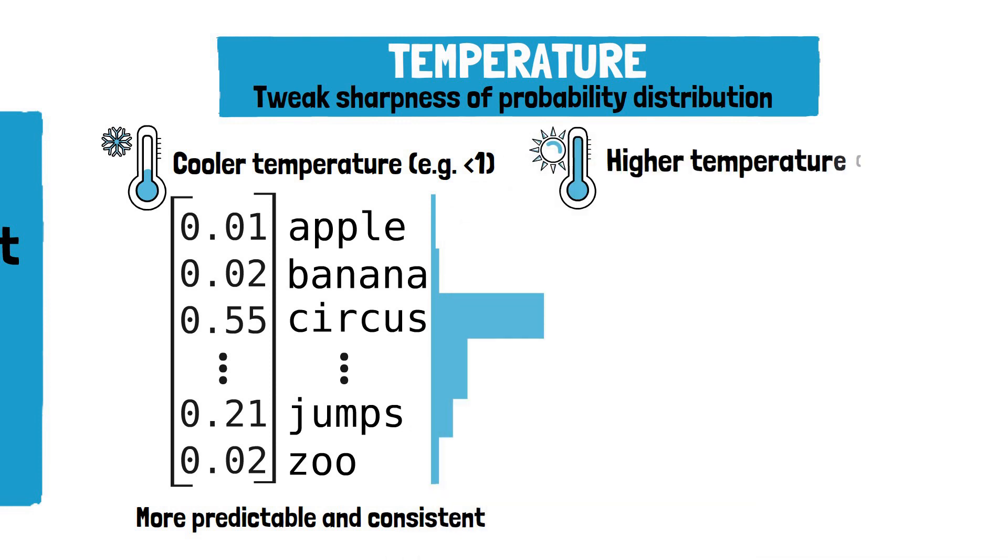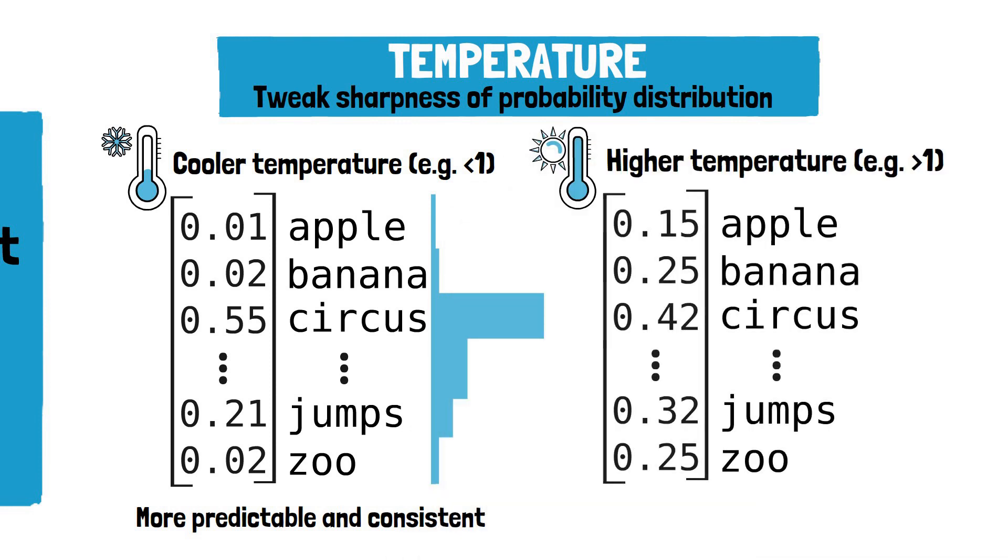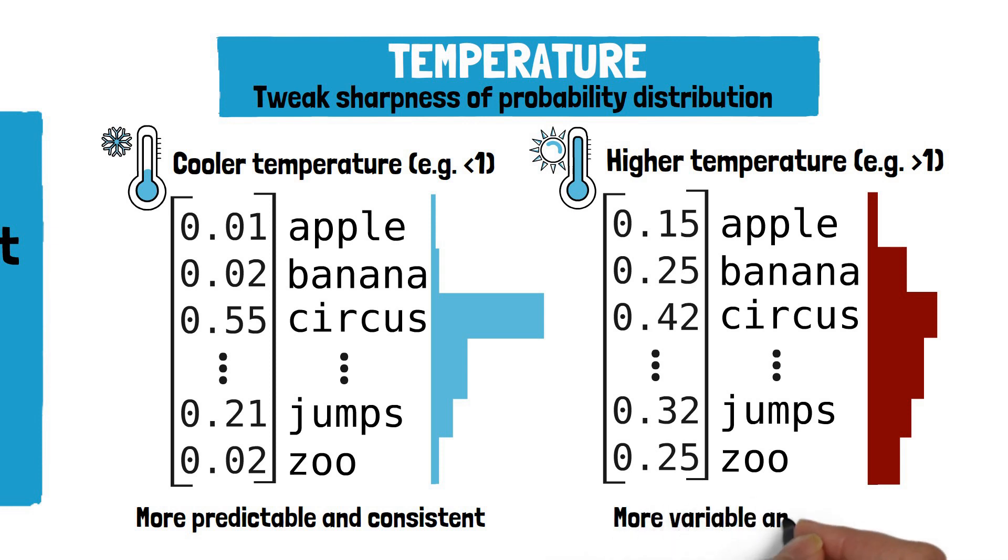On the other hand, a higher temperature spreads the probability distribution, making it flatter. Instead of a sharp peak, you'd see the probability more evenly distributed across several tokens. This makes the model's output more random, potentially infusing the generated text with greater creativity and variability.